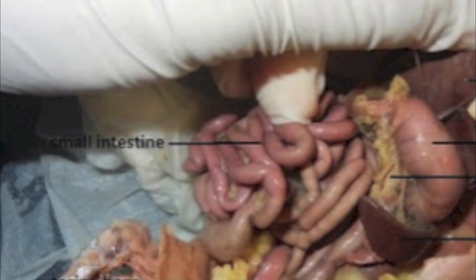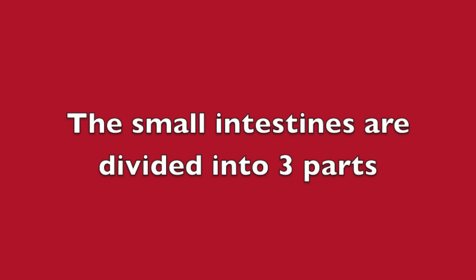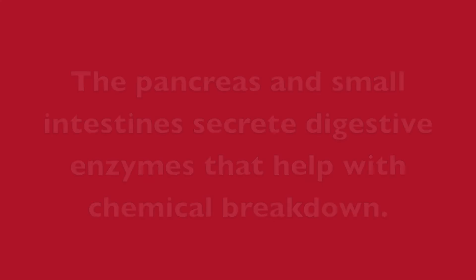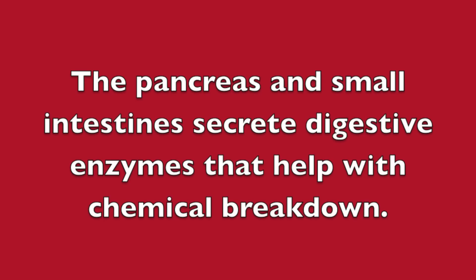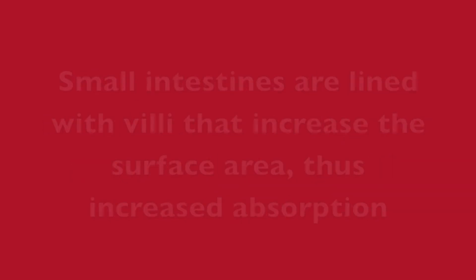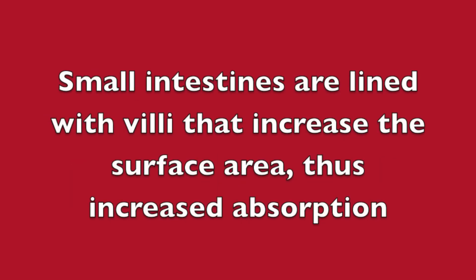The small intestines are divided into three parts: the duodenum, the jejunum, and the ileum. The pancreas and small intestine secrete digestive enzymes that help with chemical breakdown. Small intestines are lined with villi that increase the surface area and thus increase absorption.